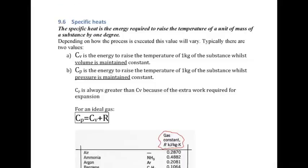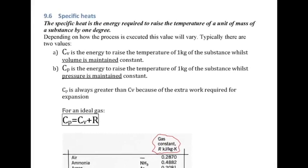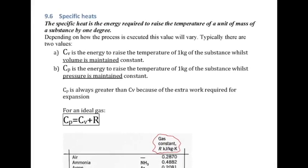Now we move on to specific heats. In your school studies, you were probably taught that the specific heat of water was 4198 joules per kilogram Kelvin — the energy required to raise the temperature by one degree for that water. When we talk about gas, the same idea applies, but it's a little more complicated. Depending on how the process is executed, the value varies.